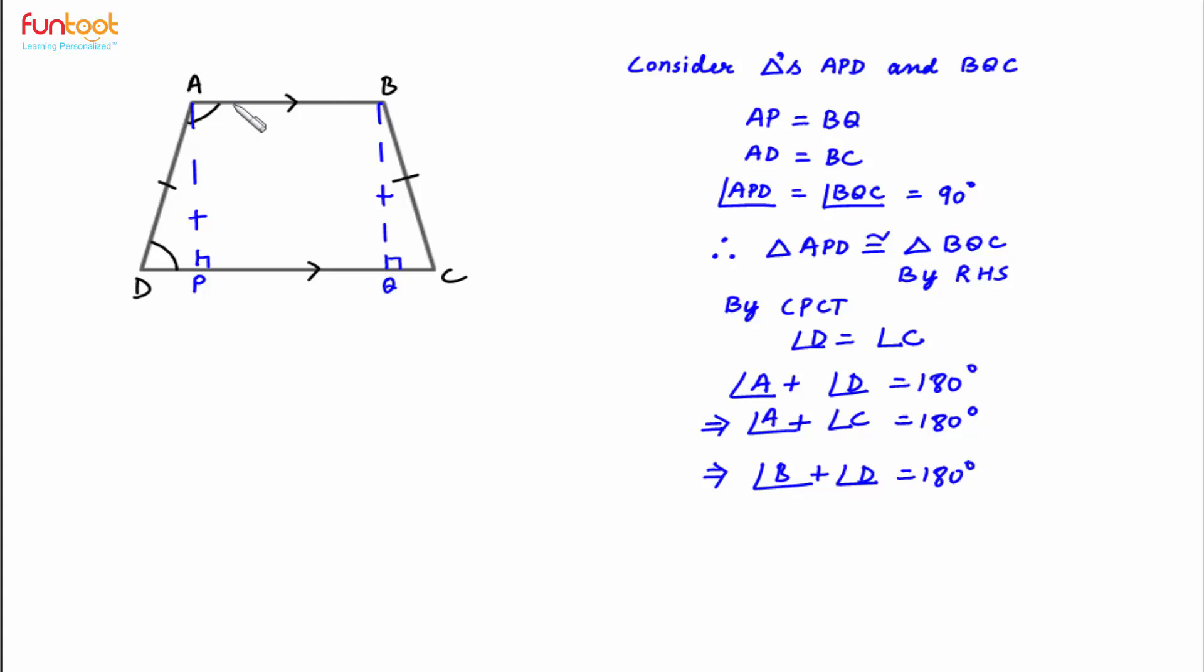Now, in ABCD, we have opposite angles supplementary. Therefore, ABCD is a cyclic quadrilateral. And all four vertices are concyclic. This is what we have to prove in this problem.